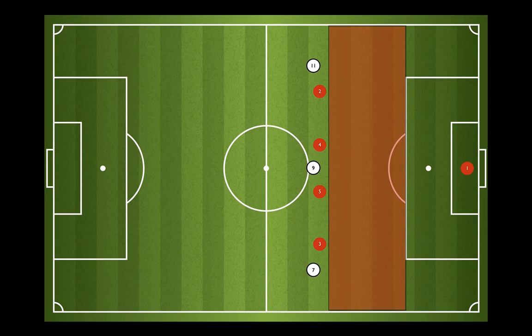Starting with 7, 9, and 11, we have these specific runs that we want to look for. The number 9 should be positioned in between the 4 and 5 almost at all times, working off the back shoulder of either player, looking to get into the channels behind number 4 and 5.